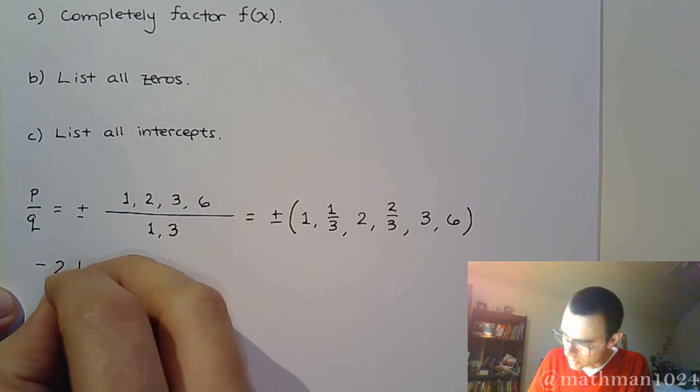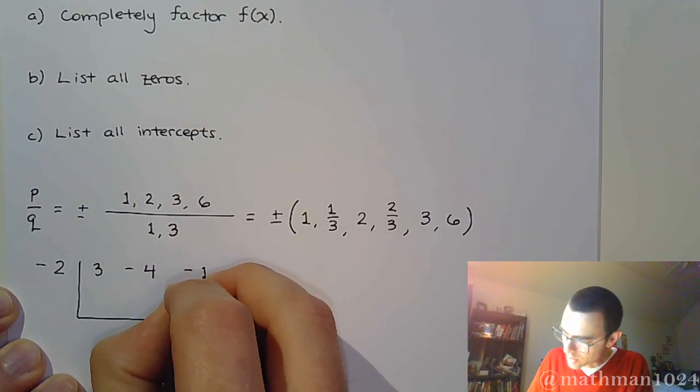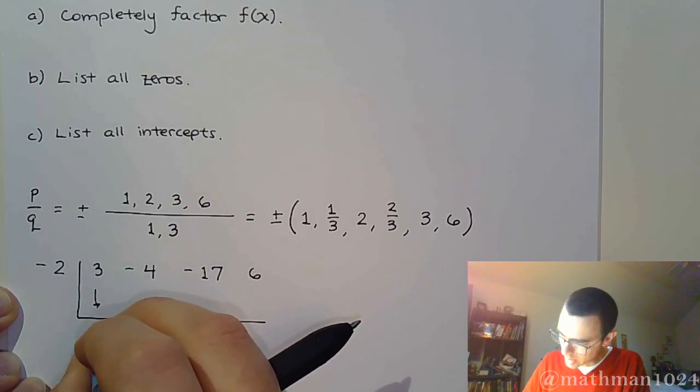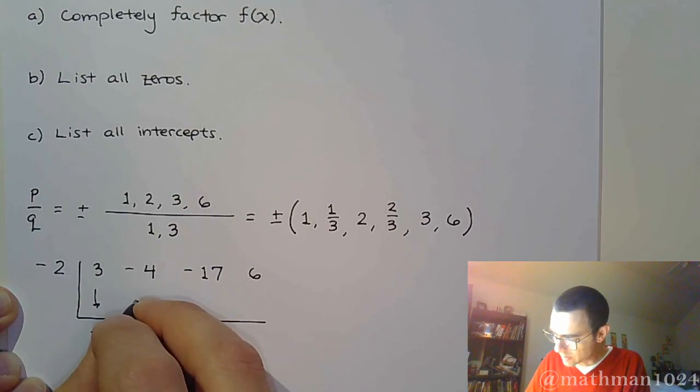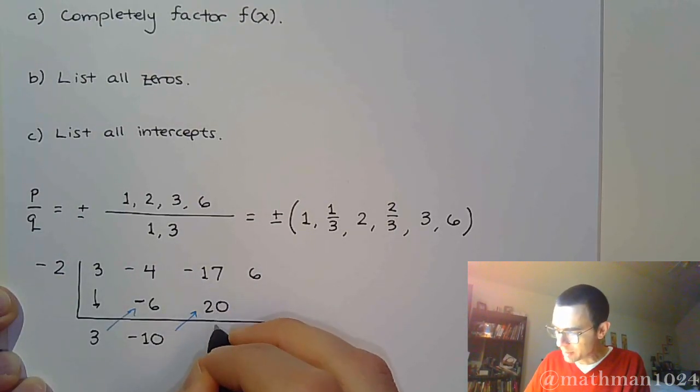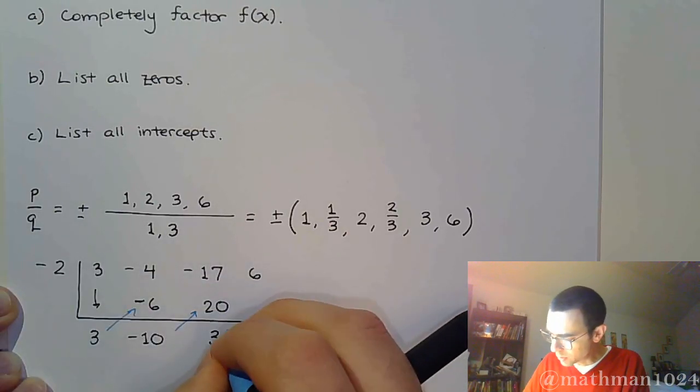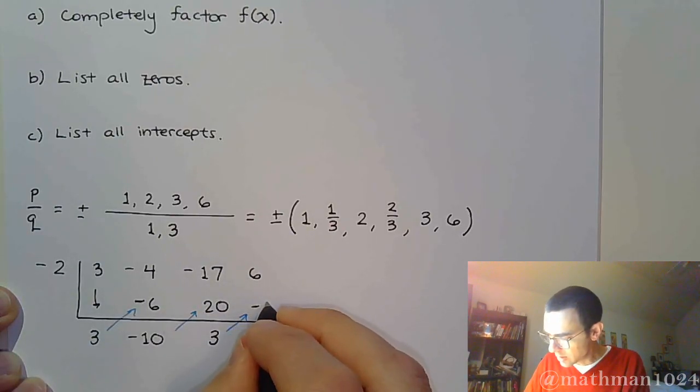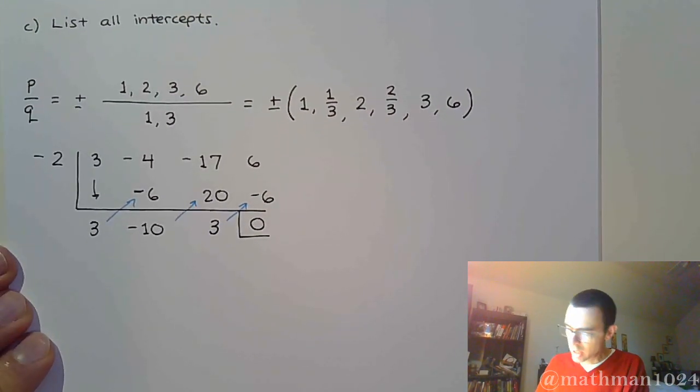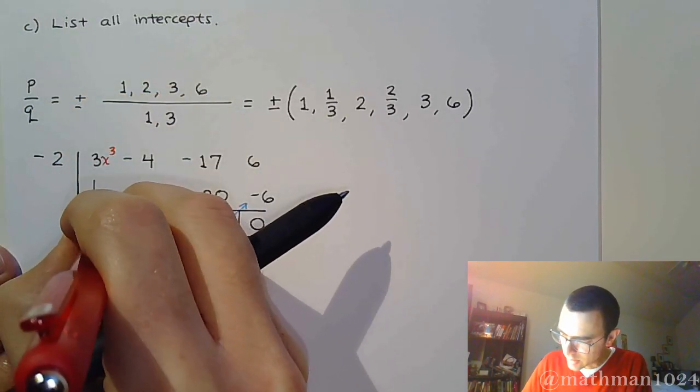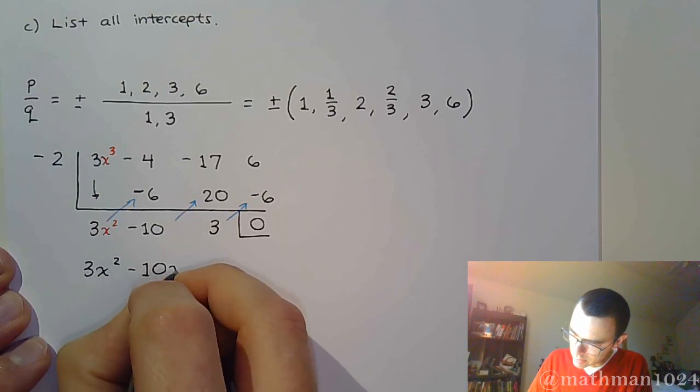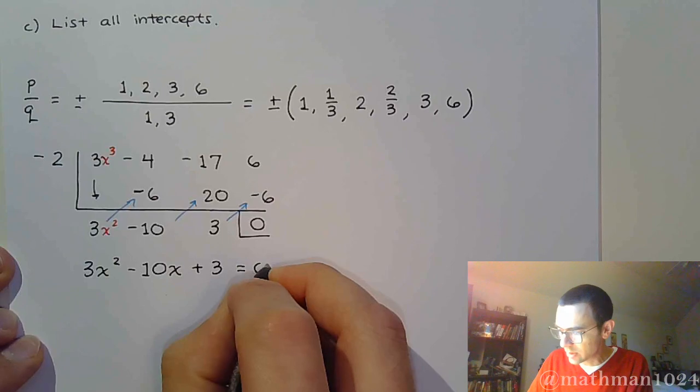All right, so my coefficients. Again, we're going to do this on the scratch work. Put it here, make it a little bit nicer and neater for you. All right, so bring down the 3. Multiply to get negative 6. Combine to get negative 10. Multiply to get positive 20. Add to get 3. Multiply to get negative 6. And, I get my remainder of 0. And, so, now we translate this. We understand that we went from x to the third to something that's x squared.